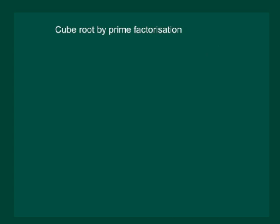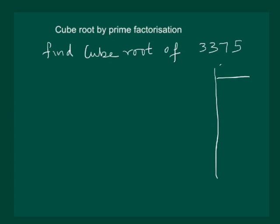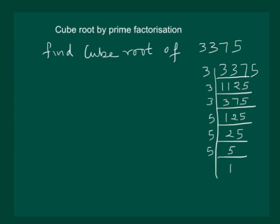Let us now learn to find the cube root of a number by using prime factorization. Let us consider an example — say we have to find the cube root of 3,375. Our first step would be to prime factorize the number. After prime factorization, we have 3,375 = 3 × 3 × 3 × 5 × 5 × 5.